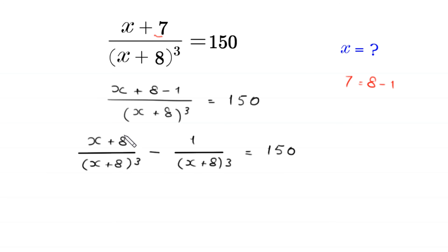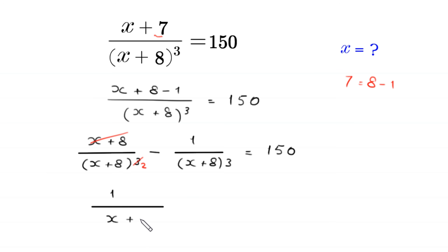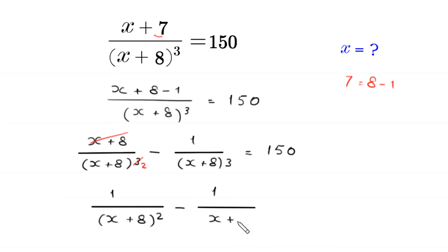Now the (x + 8) in the numerator cancels with one factor in the denominator, leaving us with 1/(x+8)² − 1/(x+8)³ = 150.